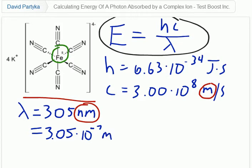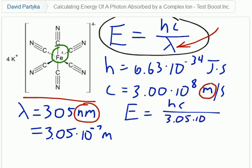Now, use this number, 3.05 times 10 to the negative 7, and substitute it into the formula. We see E is equal to hc over 3.05 times 10 to the negative 7 meters. Therefore, E is equal to, using the correct number of significant figures which is 3, and using a calculator, 6.51 times 10 to the negative 19 joules.